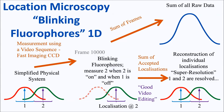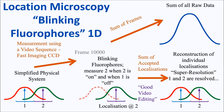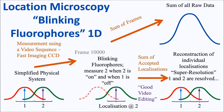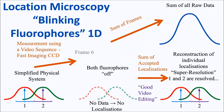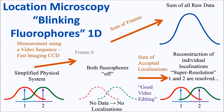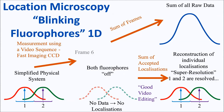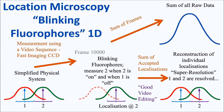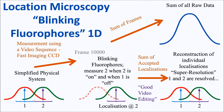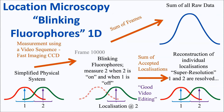We can simply sum up all the frames and we'll just get the raw data, which is identical to the diffraction-limited blur measured in the previous slide. On the other hand, we can be smart and plot the sum of accepted localizations. This sum of accepted localizations will give us a super-resolution image where we can resolve point 1 and point 2 separately. Since we know the positions of 1 and 2, we've essentially overcome the diffraction limit.